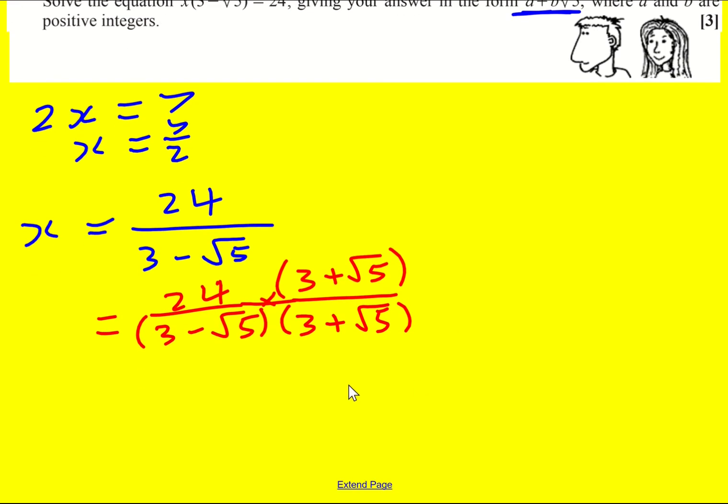Put these into brackets now and put it all over this denominator. I just need to simplify the fraction. So I'm going to get 24 times 3. That's going to be 72 plus 24 root 5.